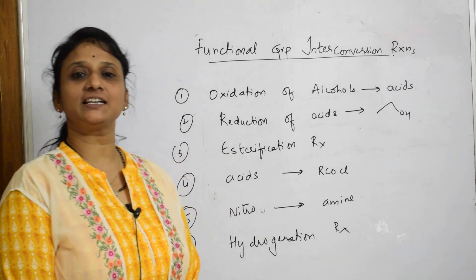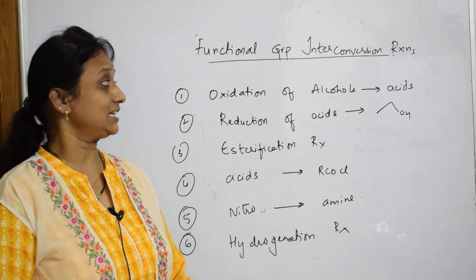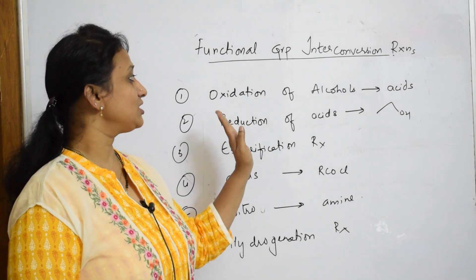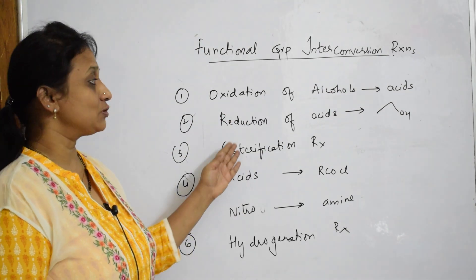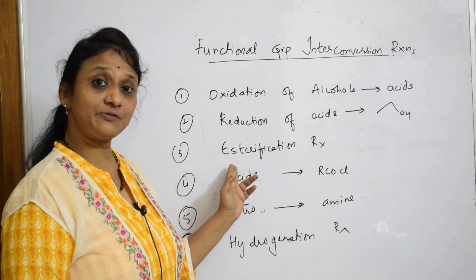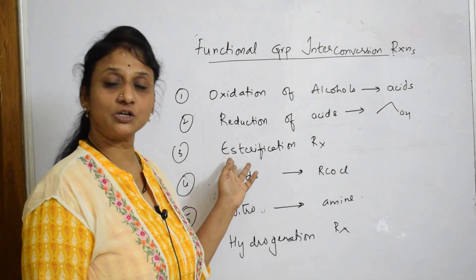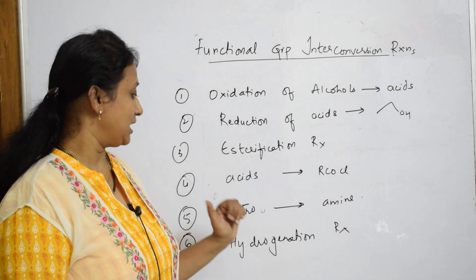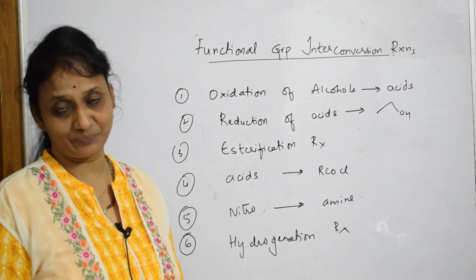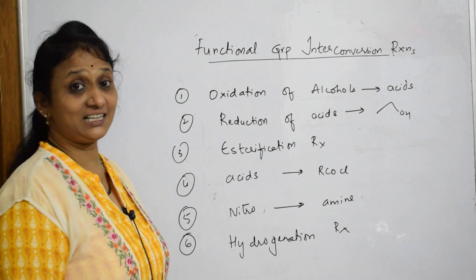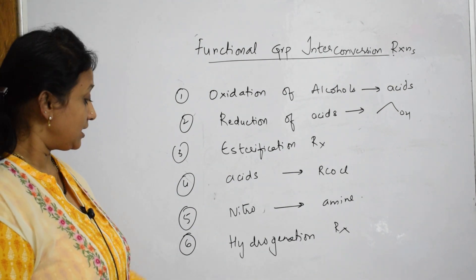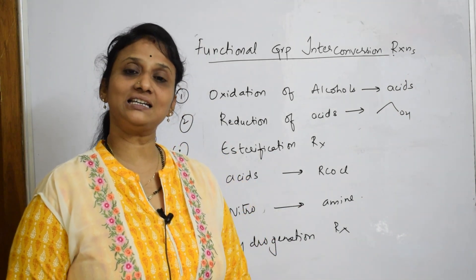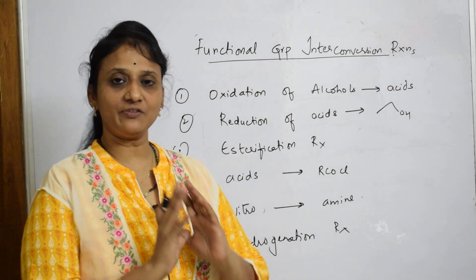The third category — functional group interconversions — includes: oxidation of alcohols to acids, reduction of acids, esterification where an ester is broken down into an acid and alcohol, conversion of acids to acyl chlorides (COCL), interconversion of nitro groups to amines, nitrile converted to amine using a reducing agent, and hydrogenation reactions. These are a few examples of the third category.